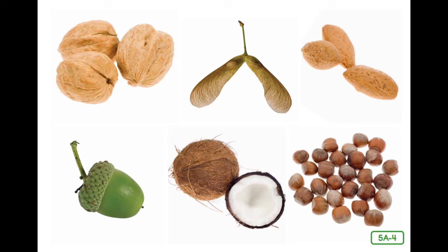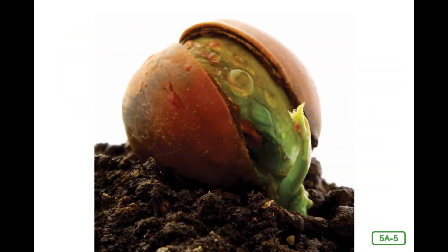Germination is when a seed begins to grow or sprout. Certain conditions are required for germination to happen. In the temperate parts of the world, the seasons affect the life cycle of living things, especially plants. Therefore, when there is enough warmth and direct sunlight, as well as water from rain, the seed splits open and germination begins. This usually occurs in spring. Once germination begins, the seed produces roots in search of groundwater. As they find water, the roots hold fast in the ground and a stem grows up towards the sunlight. Tiny seed leaves open and use the sun and water to make food. The seed has become a seedling or young plant.